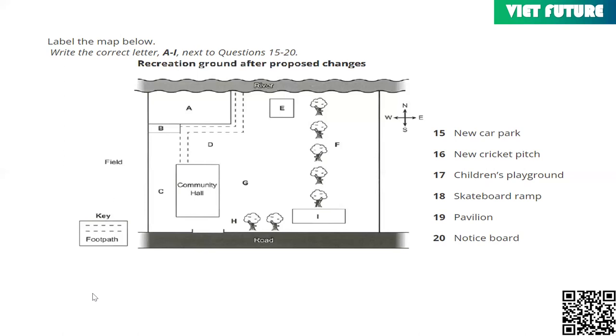At present, cars can park between the community hall and that line of trees to the east, but this is quite dangerous for pedestrians, so we're suggesting a new car park on the opposite side of the community hall right next to it.